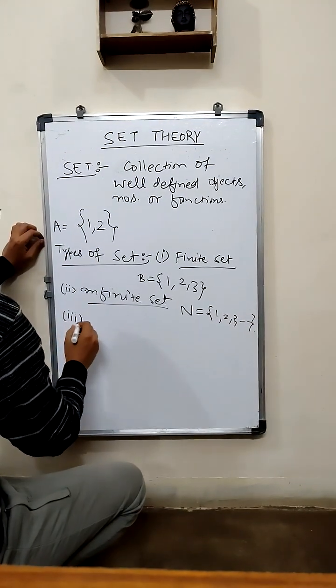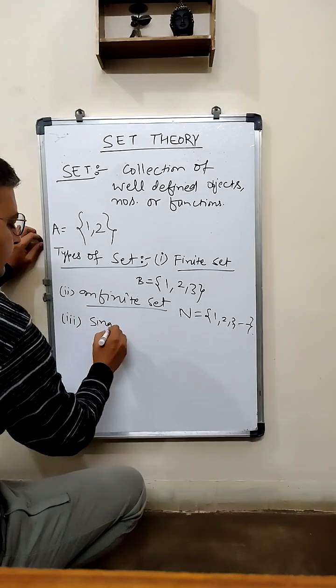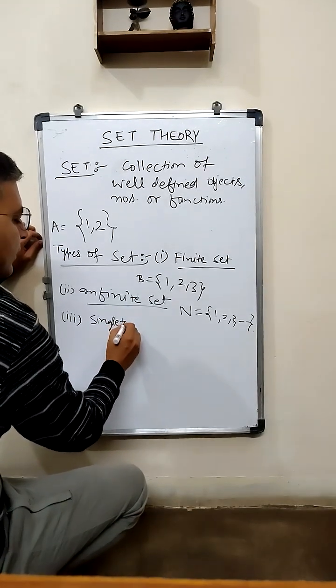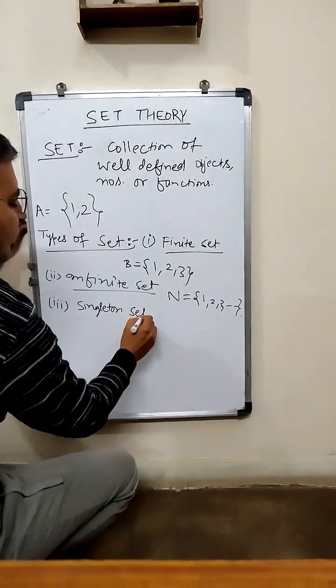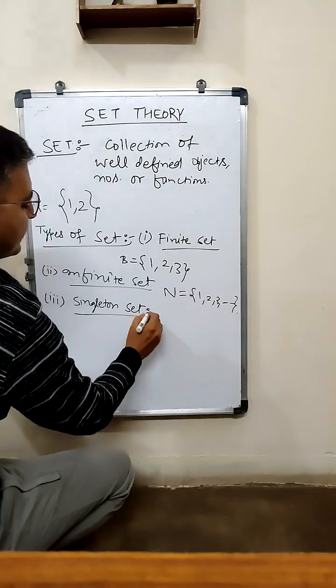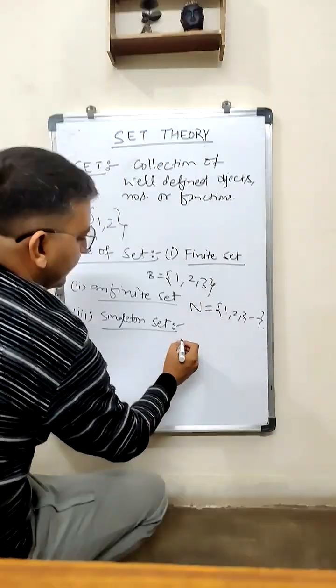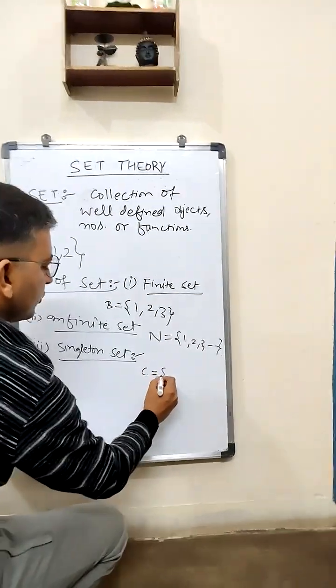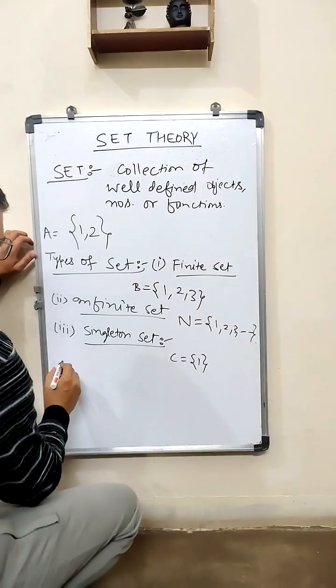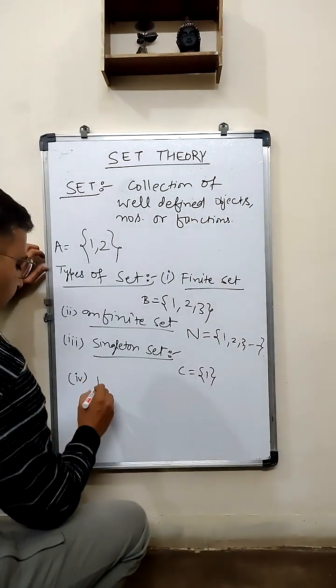Now next comes third: singleton set. A set having only one element, as its name suggests, is known as singleton set. For example, C is equal to {1}. And the fourth one is null set or void set.